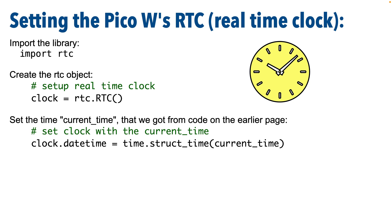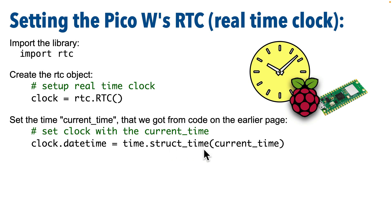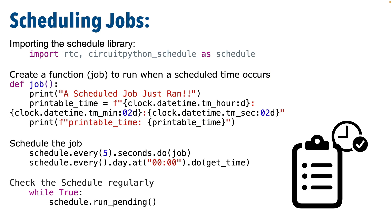Now that we have the time, we'll use it to set the internal clock — called an RTC, or real-time clock — on the Raspberry Pi Pico W. To do this, we import the RTC library, then use it to create an object of class type RTC, which we'll call clock. To set the clock, we simply set the datetime property of our clock object using the time library's struct_time method, passing in the structured time data from current_time to set the clock with the proper time.